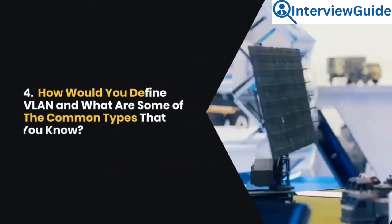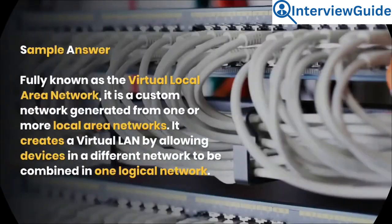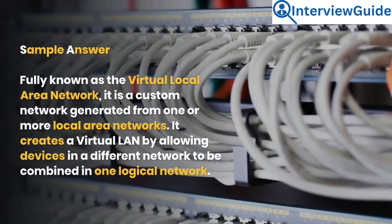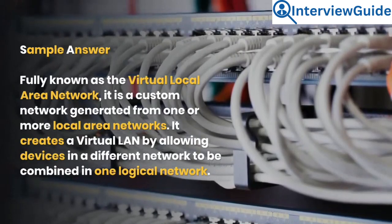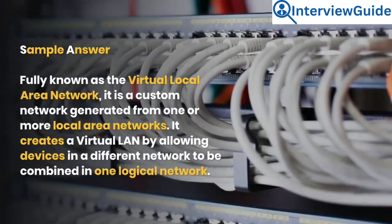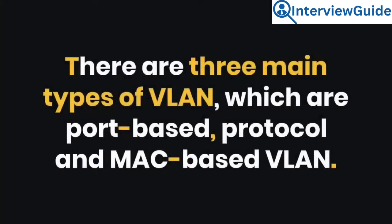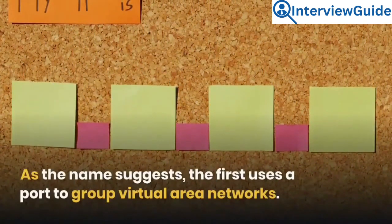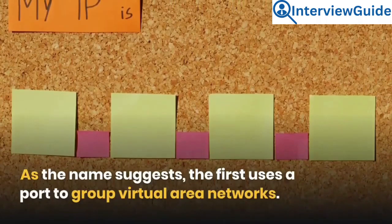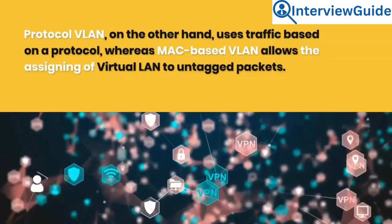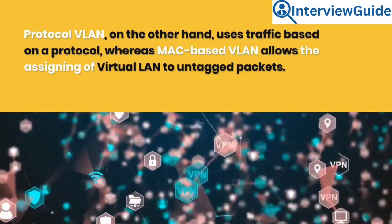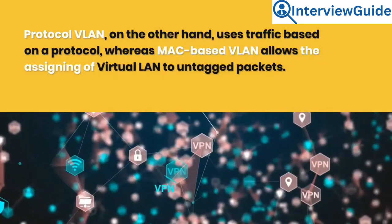Question 4: How would you define VLAN and what are some of the common types that you know? Fully known as the Virtual Local Area Network, it is a custom network generated from one or more local area networks. It creates a virtual LAN by allowing devices in different networks to be combined in one logical network. There are three main types of VLAN: port-based, protocol, and MAC-based VLAN. The first uses a port to group virtual area networks. Protocol VLAN uses traffic based on a protocol, whereas MAC-based VLAN allows the assigning of virtual LAN to untag packets.